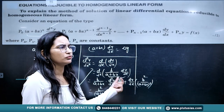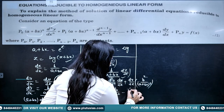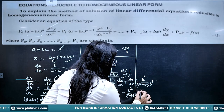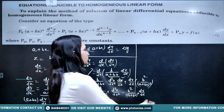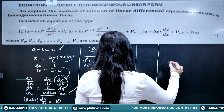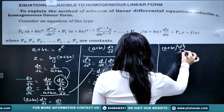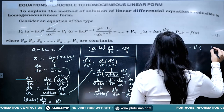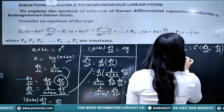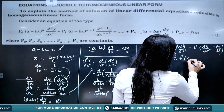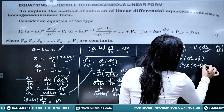After simplification, b² is a common factor and (a+bx) is common too. Multiplying through by (a+bx)², we get (a+bx)²·(d²y/dx²) = b²·(d²y/dz² − dy/dz). In operator notation, this is b²·(D² − D)y = b²·D(D−1)y.